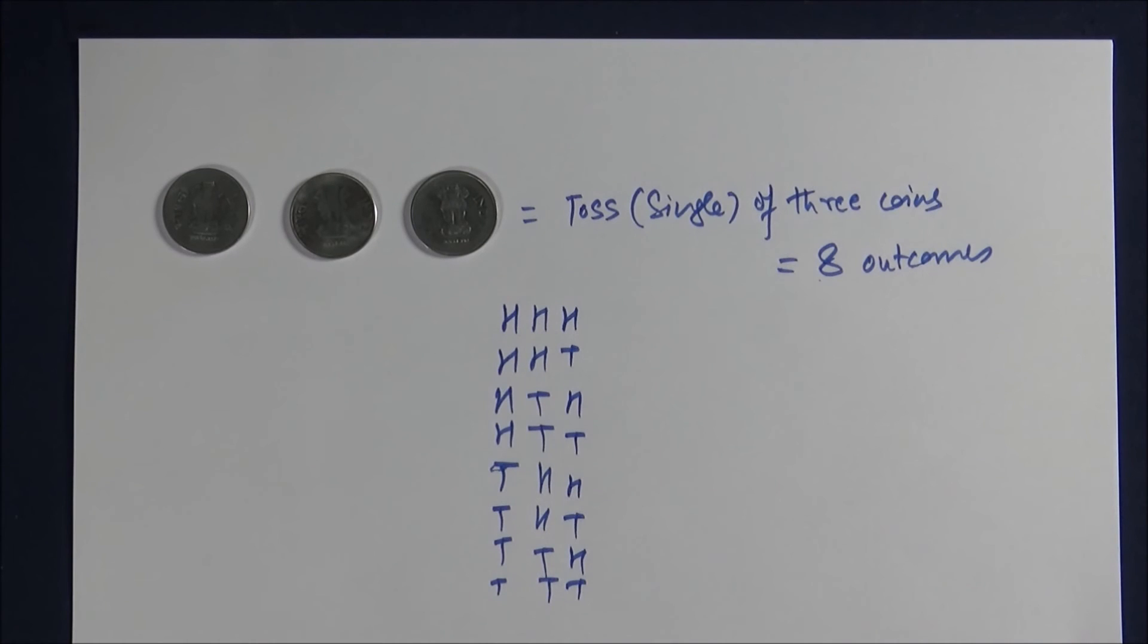So if they tell you to make or write down the sample space, this will be the sample space. And you can even extend this to four coins.